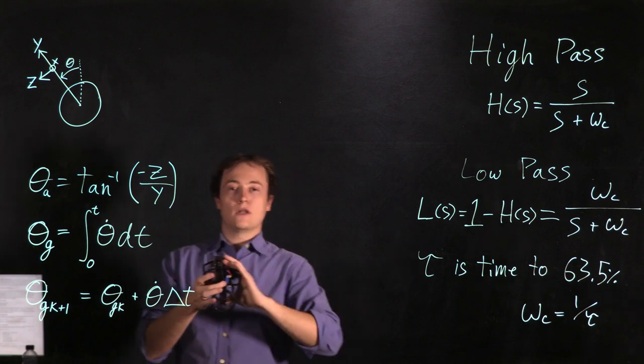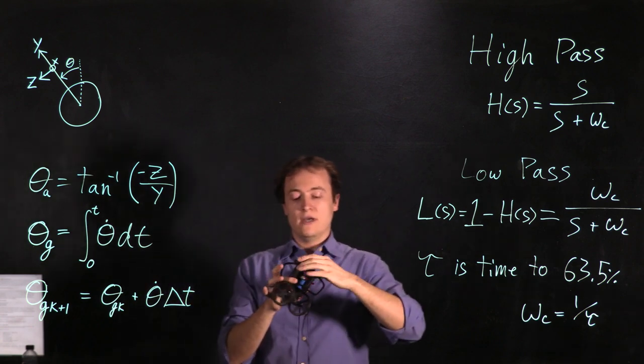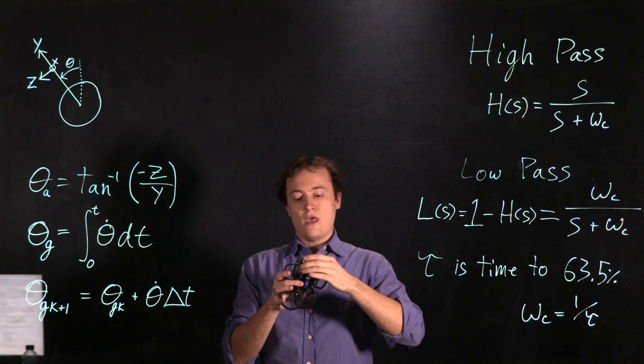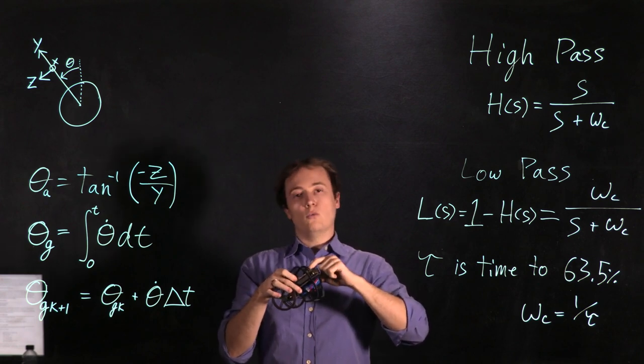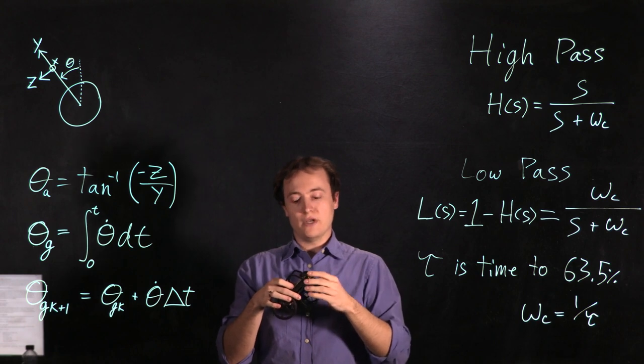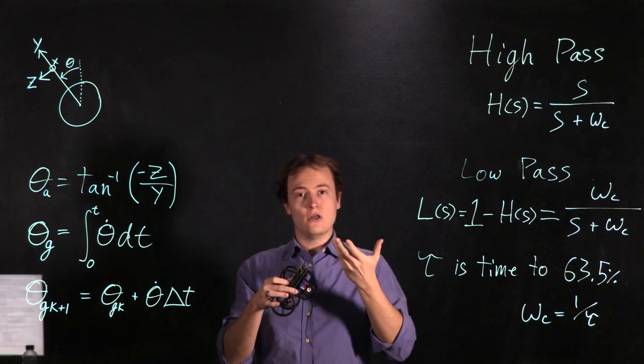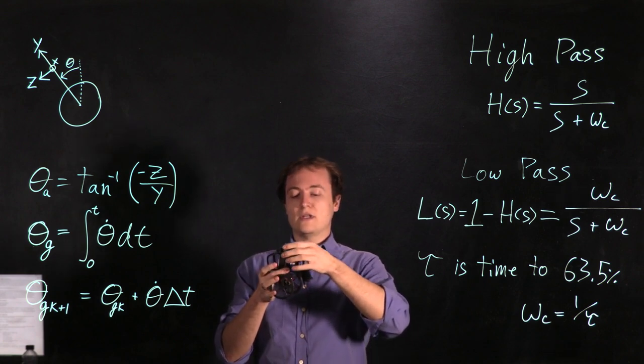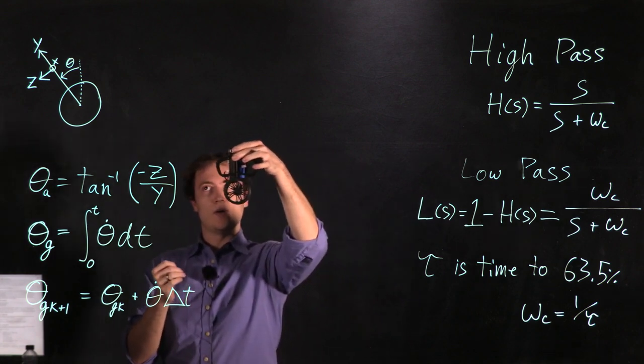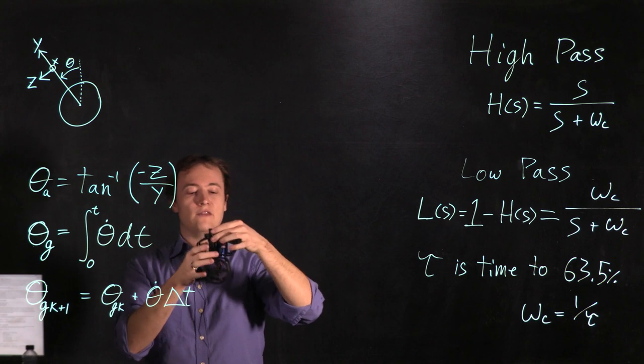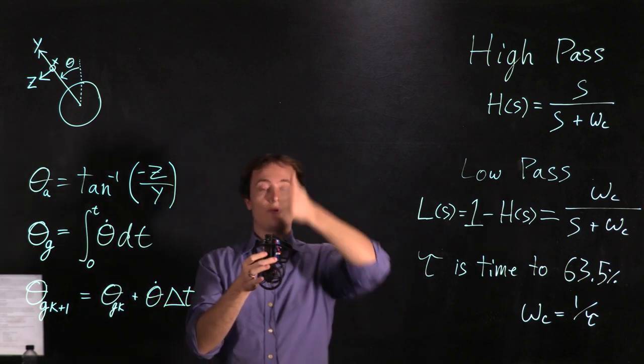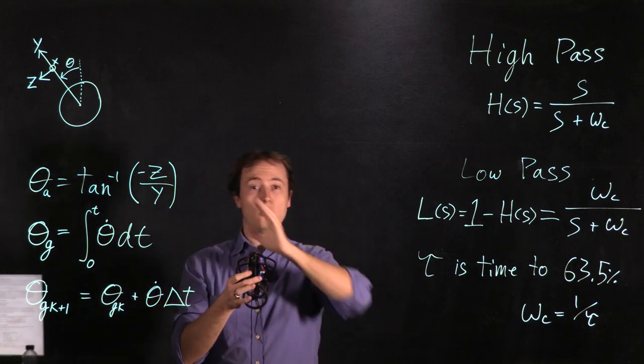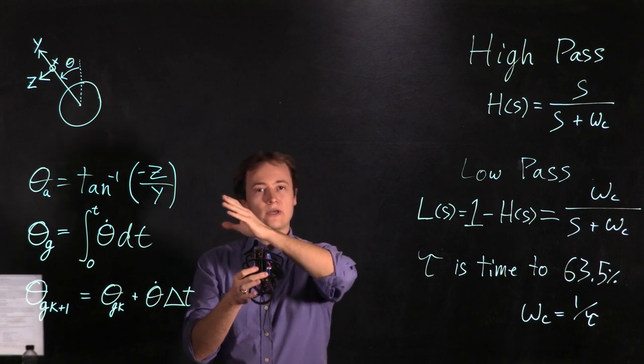Now these accelerometers are going to measure a positive value when the direction of that coordinate system is pointing opposite to gravity because it's measuring acceleration not the force induced by gravity. And so in this scenario when the MIP is sitting completely upright we are going to have the y direction pointing straight up and that's going to measure a positive 9.81 meters per second squared.